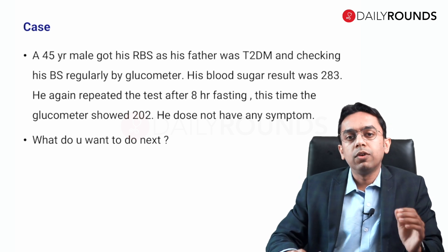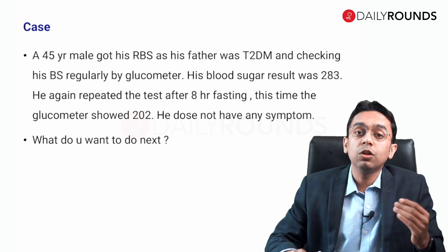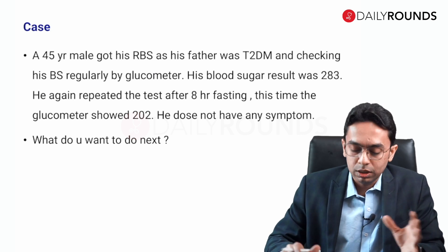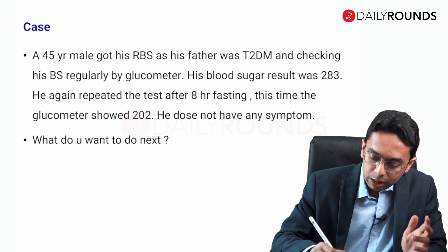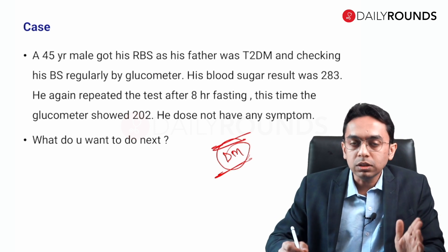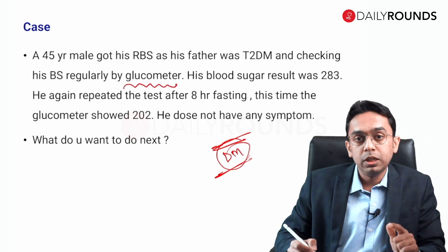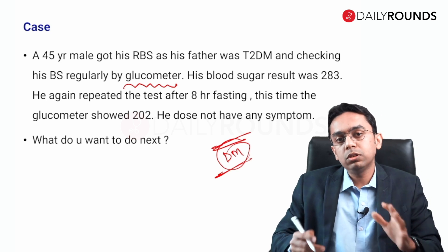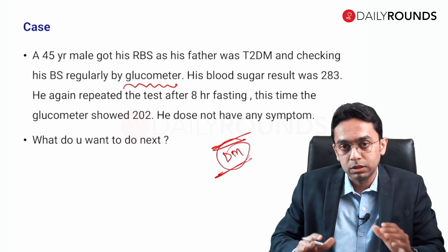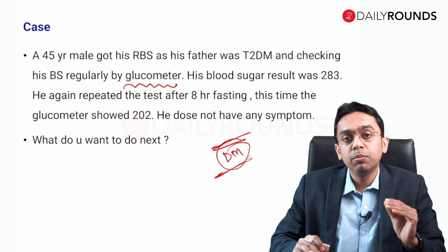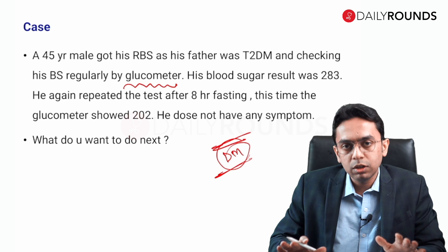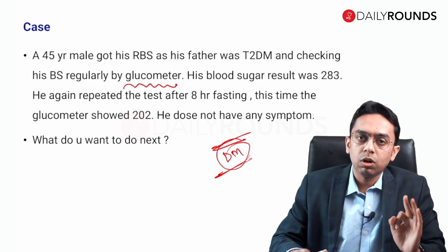What do you want to do next? Whether you want to label the patient as diabetes or not, and whether you want to start him on any treatment or just dietary management. Most importantly, you should not label this patient as diabetes. Why? Because this blood sugar was checked from a glucometer. You cannot label by a glucometer reading — it may not be accurate, you don't know how the sample was processed. Glucometer is accurate, but for diagnosis, glucometer should not be used.